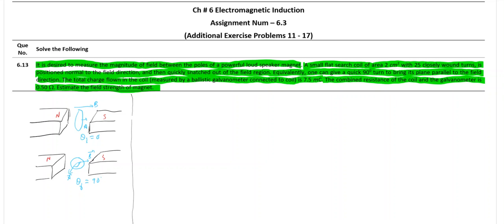We are given that the area of the coil is 2 cm². Don't forget to convert it into meter square. Number of turns, 25. It is given rotation from 0 degree to 90 degree. And charge passing through the coil is 7.5 millicoulomb. So 7.5 into 10 raised to minus 3, you should take while calculating the answer. Resistance of galvanometer is given 0.50 ohm. And we are asked to find out strength of magnet means B we have to calculate.